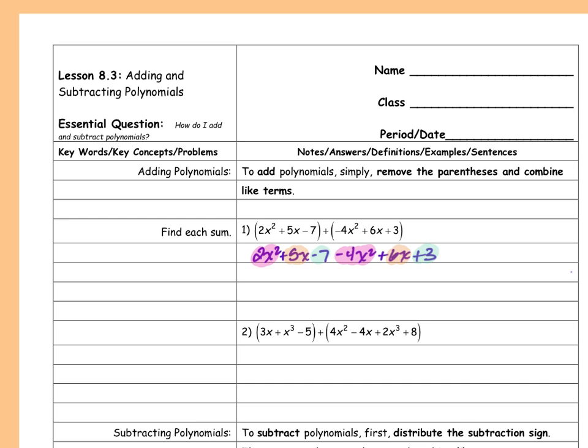Those are my like terms, and now we're just going to combine them together. So 2x squared minus 4x squared equals negative 2x squared, because 2 minus 4 is negative 2. And then 5x plus 6x is 11x, because 5 plus 6 is 11. And then negative 7 plus 3 is negative 4. And that's it — that's the whole answer.